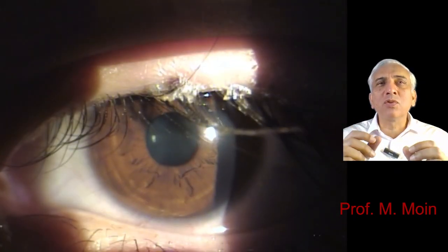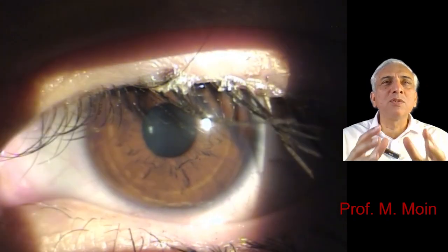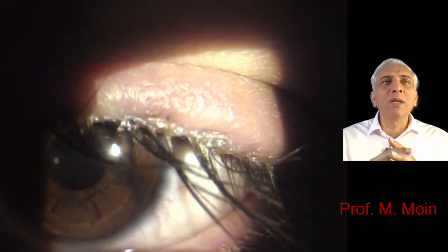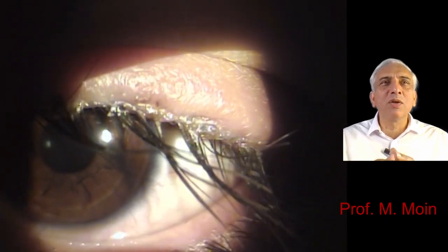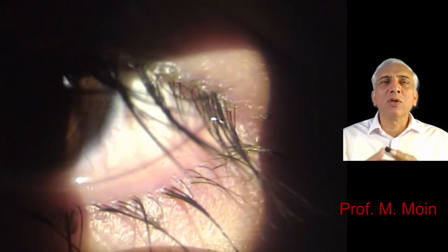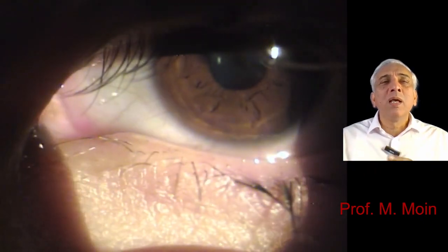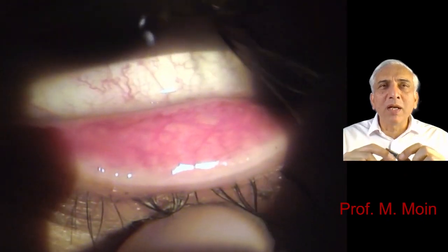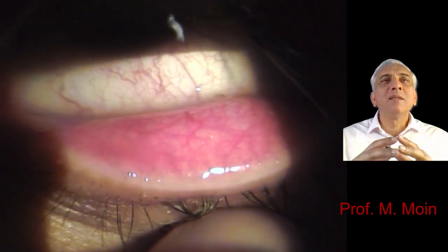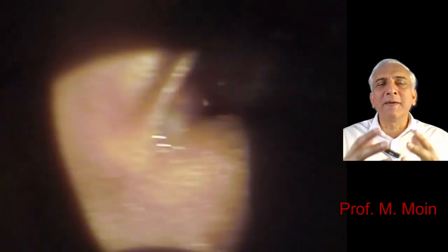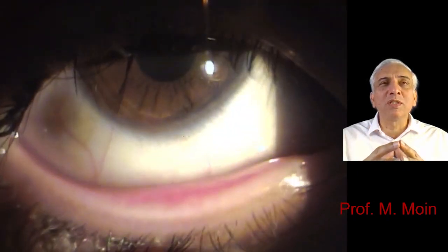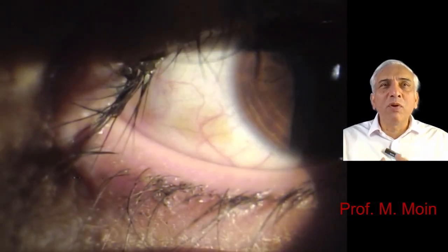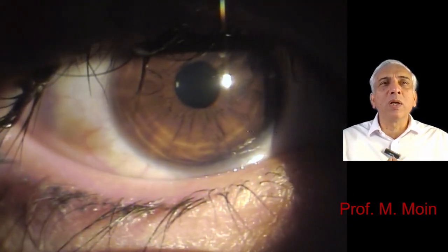Sometimes when you remove those crusts, you might get slight oozing from the base — don't worry about that. Once you remove the crust, the next step is to apply ointment to the base of the lashes. The ointment can be erythromycin or tobramycin. If there is associated redness or erythema of the lid margin, you also need to use topical mild steroids. Sometimes if you get chronic chalazion or sty formation along with that, you might need oral antibiotics.